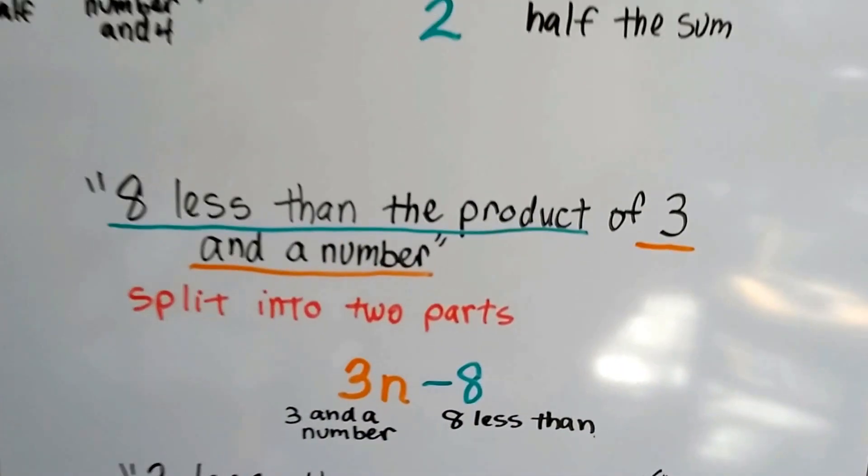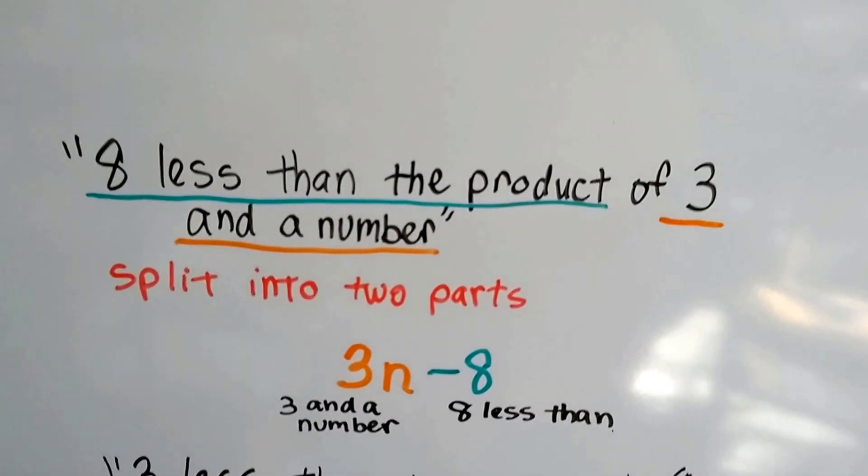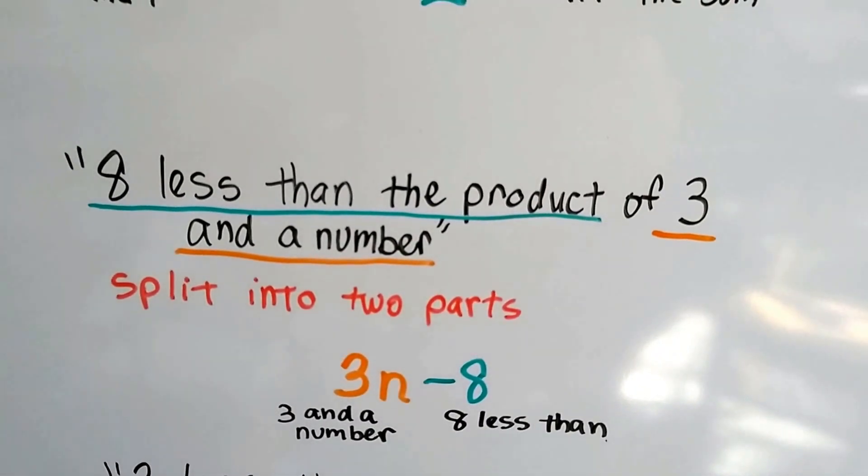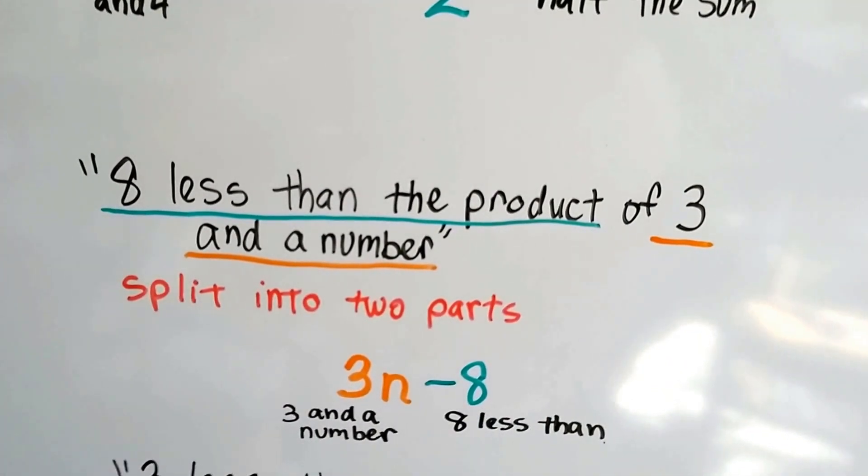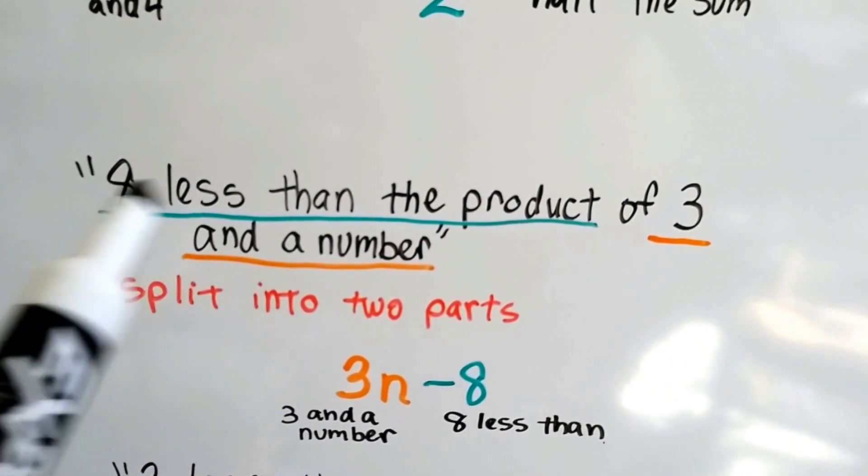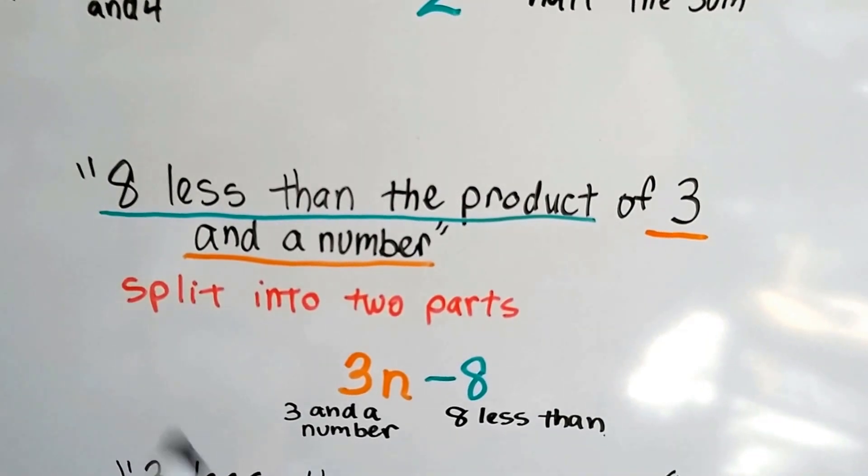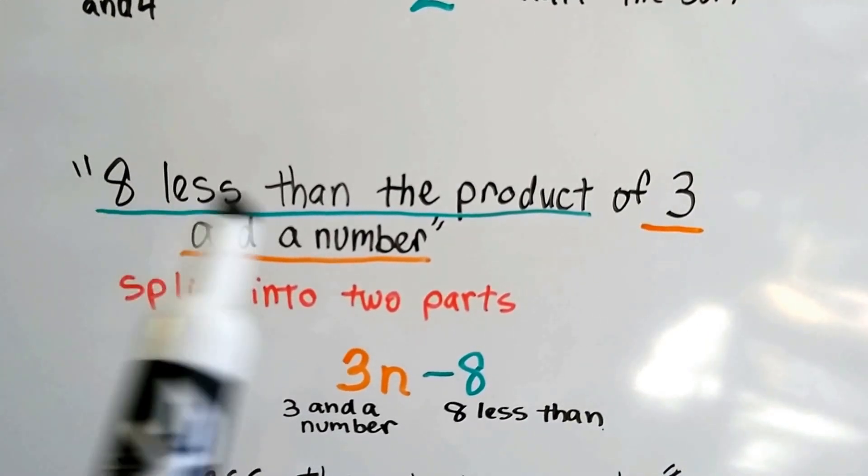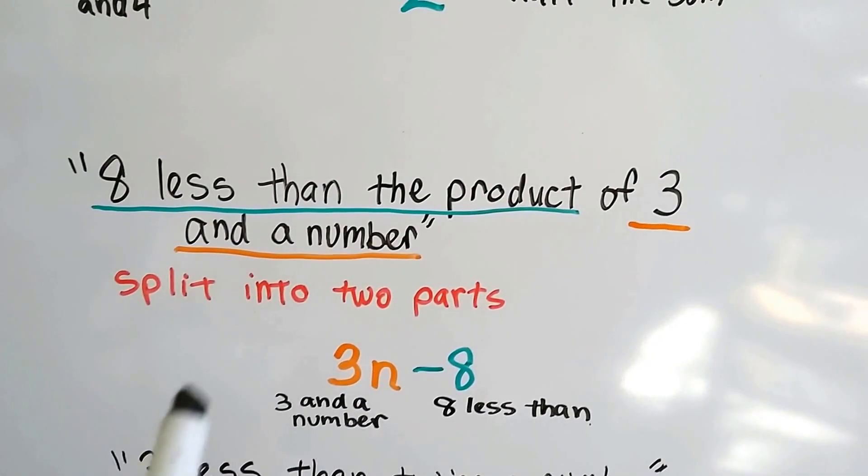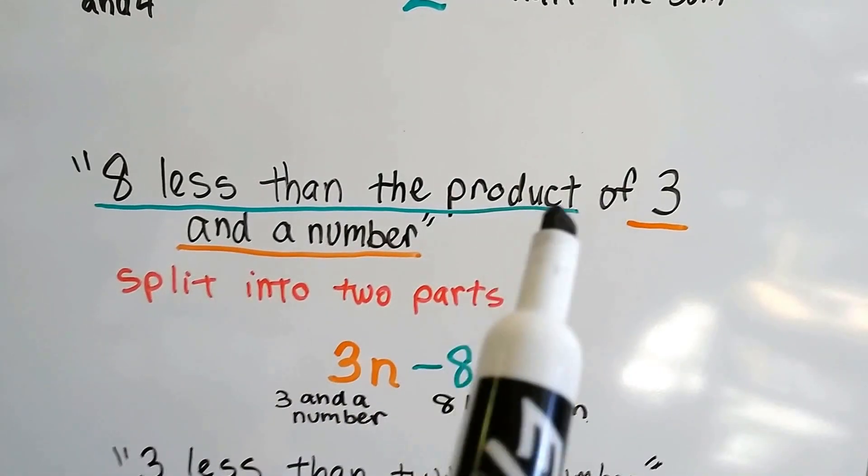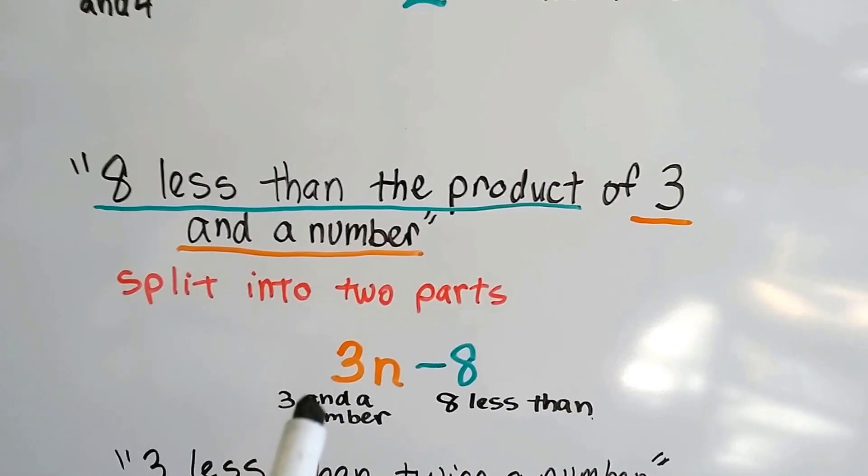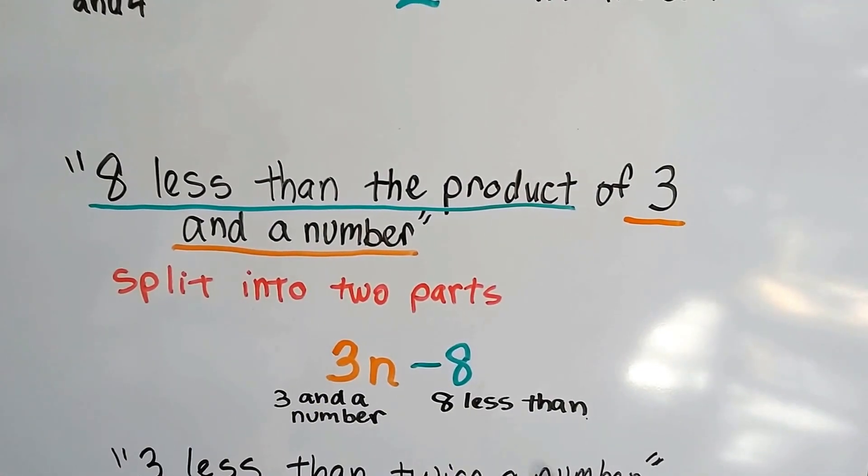What if it said eight less than the product of three and a number? Well, product tells us there's multiplication. And if it's eight less than that, there's going to be some subtraction. We can split this into two parts: eight less than the product, and three and a number. Because of product, that means it's three times a number. So we have three n minus eight.